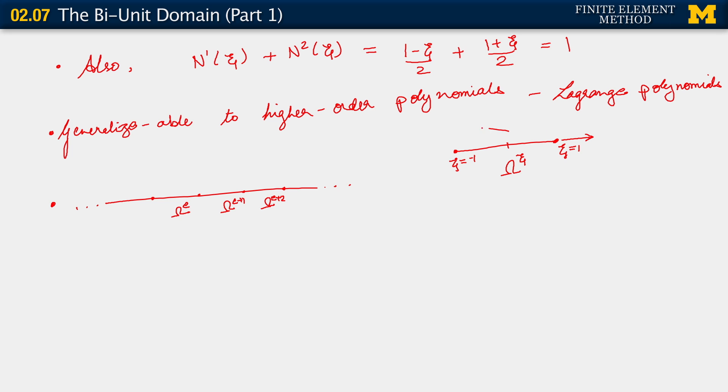Note that an arbitrary element ωe, or ωe+1, is from the same element in the bi-unit domain, the same parent element as it is sometimes called in the bi-unit domain. Once we do this, we get our basis functions in the physical domain. And I want to draw them, which I want to do in a different color here. So, in the physical domain, if we look at element ωe, we'd have this basis function and that one.